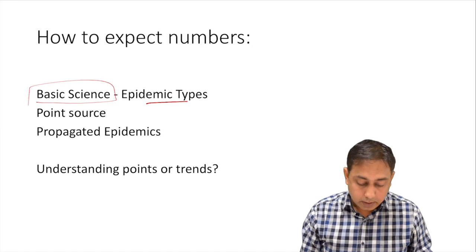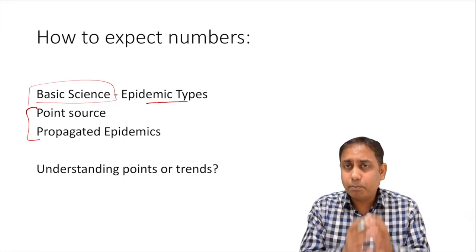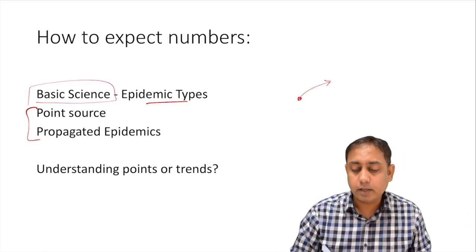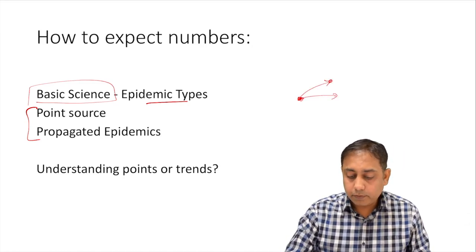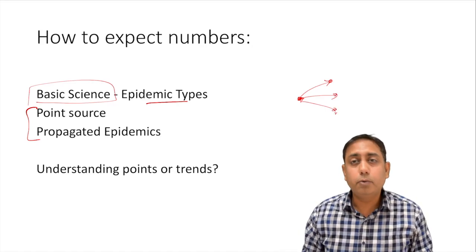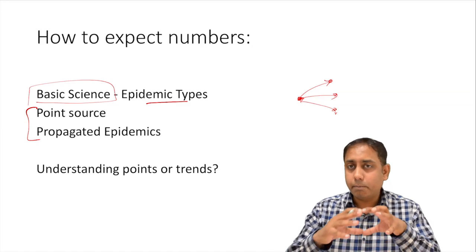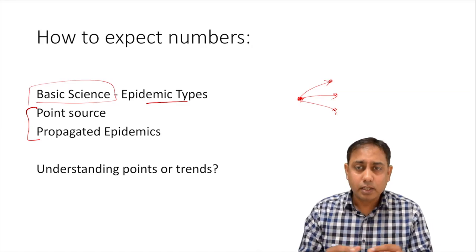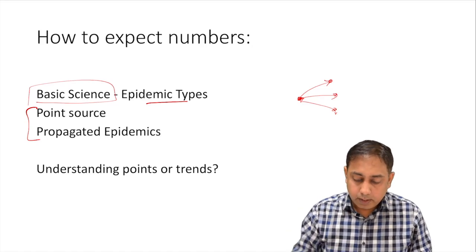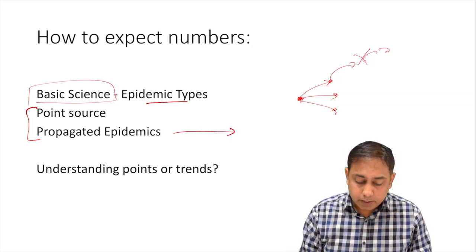The epidemic types could broadly be of many kinds. First, we can have a point source, where a single point is infecting another person. This is usually seen in foodborne outbreaks, food poisoning, or vaccine reactions — a single nidus that usually does not spread from person to person.